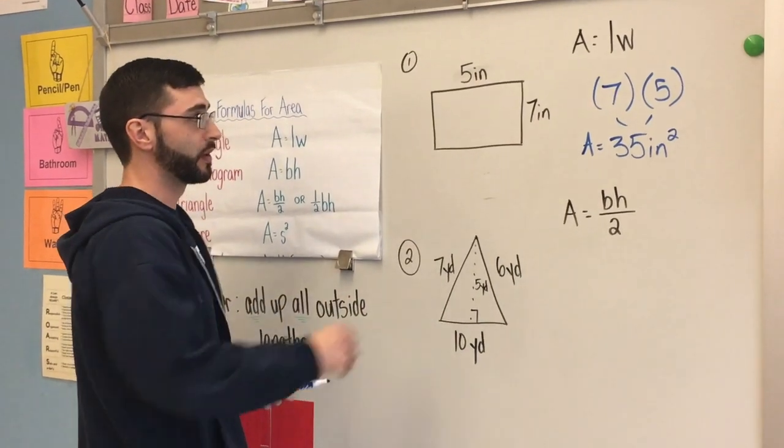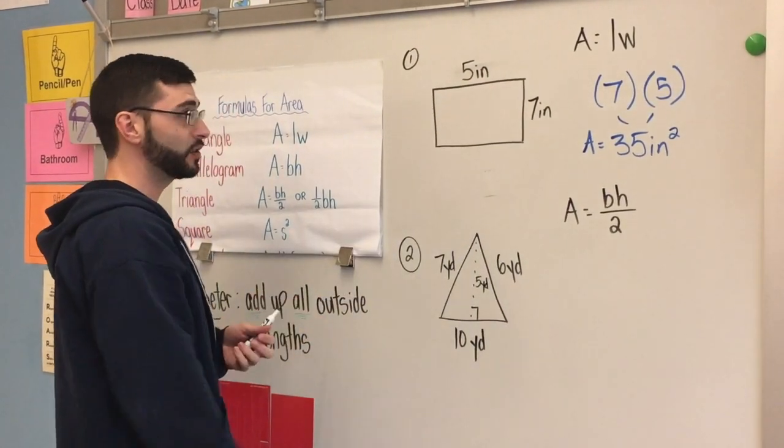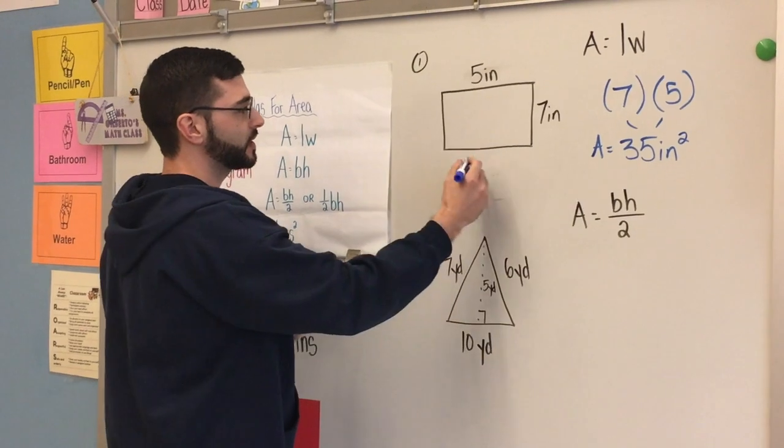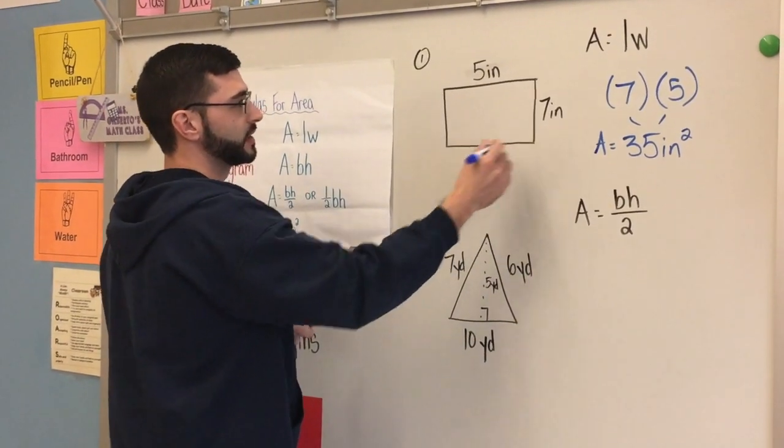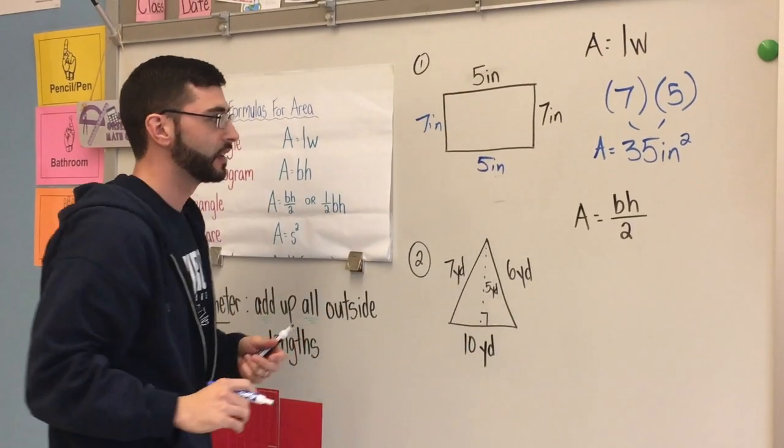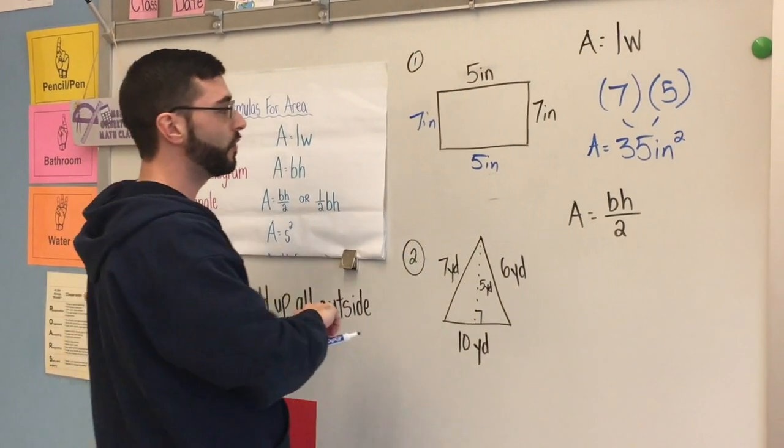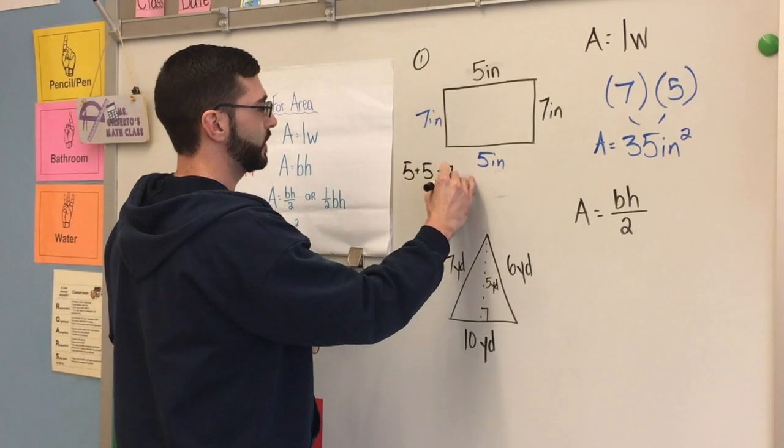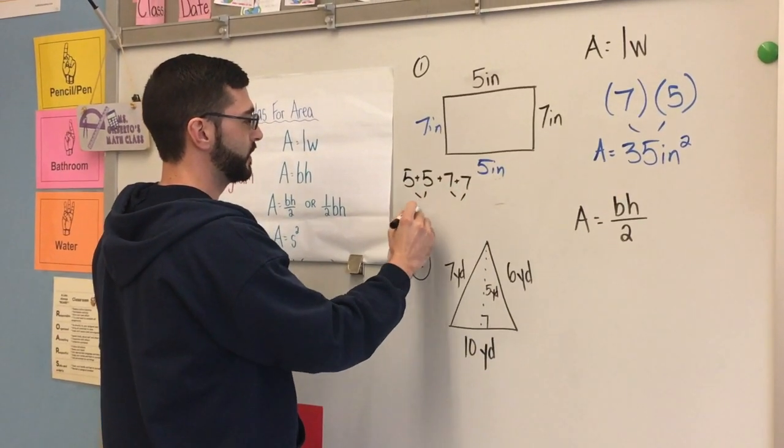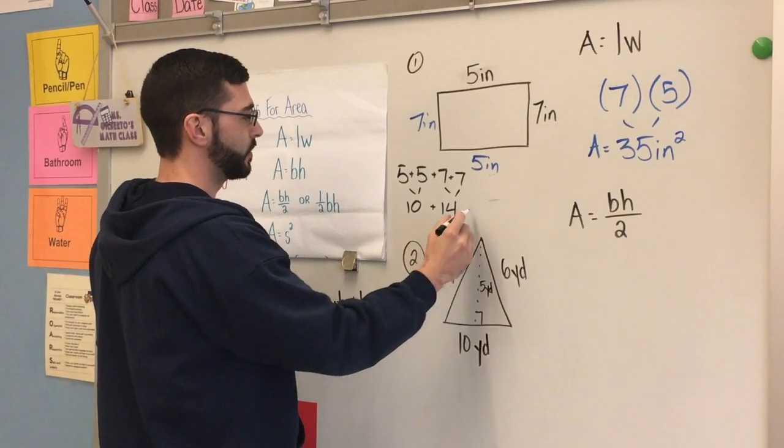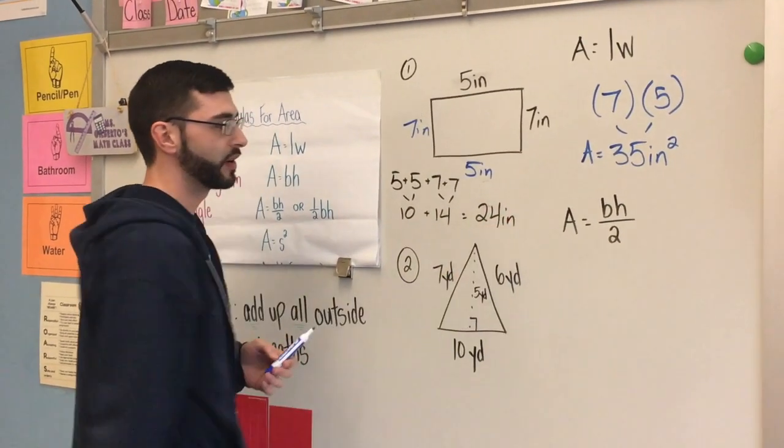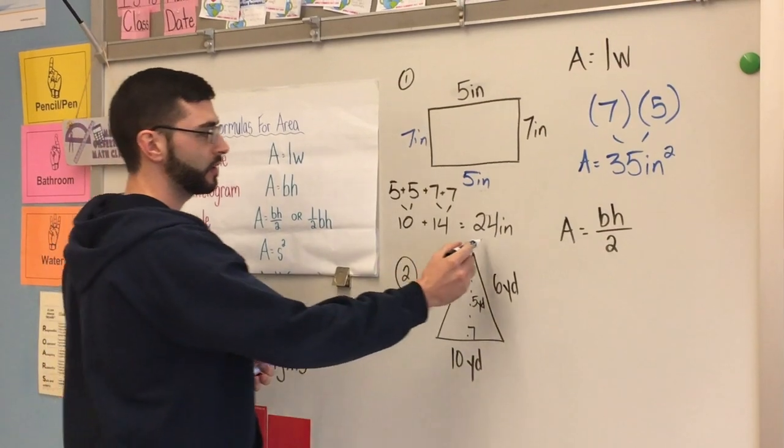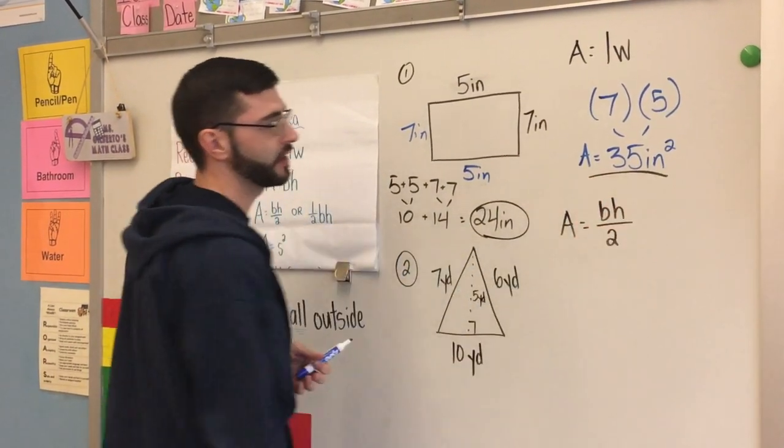But now we're also solving for perimeter. We have two of the four, but we have to use these as clues. Ms. Colberto mentioned before how its opposites are equal. So if that's five, this side also is five. If this is seven, this side is also seven. And then we have to add up all the outside lengths. So five plus five plus seven plus seven. Five plus five is ten. Seven plus seven is fourteen. Ten plus fourteen, twenty-four inches. Perimeter, we do not have to add the square. Only area. So our final answer for perimeter is 24.